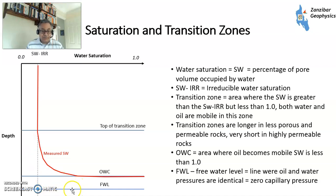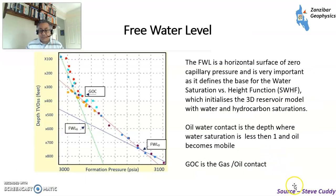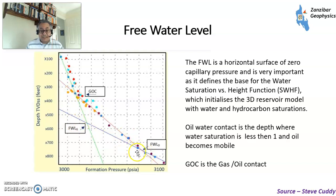This is a diagram from Steve Cuddy - he's a petrophysicist who publishes quite a lot on LinkedIn, so please follow him if you want more details. Here you have a pressure versus depth graph, with depths below datum (in this case sea level) and pressures measured by tools like an MDT or RFT tool. At the free water level, the water gradient intersects the hydrocarbon gradient. You can have different free water levels for different units, and above that depth, water saturation is less than one and oil becomes mobile. This is used as a basis for saturation height functions.